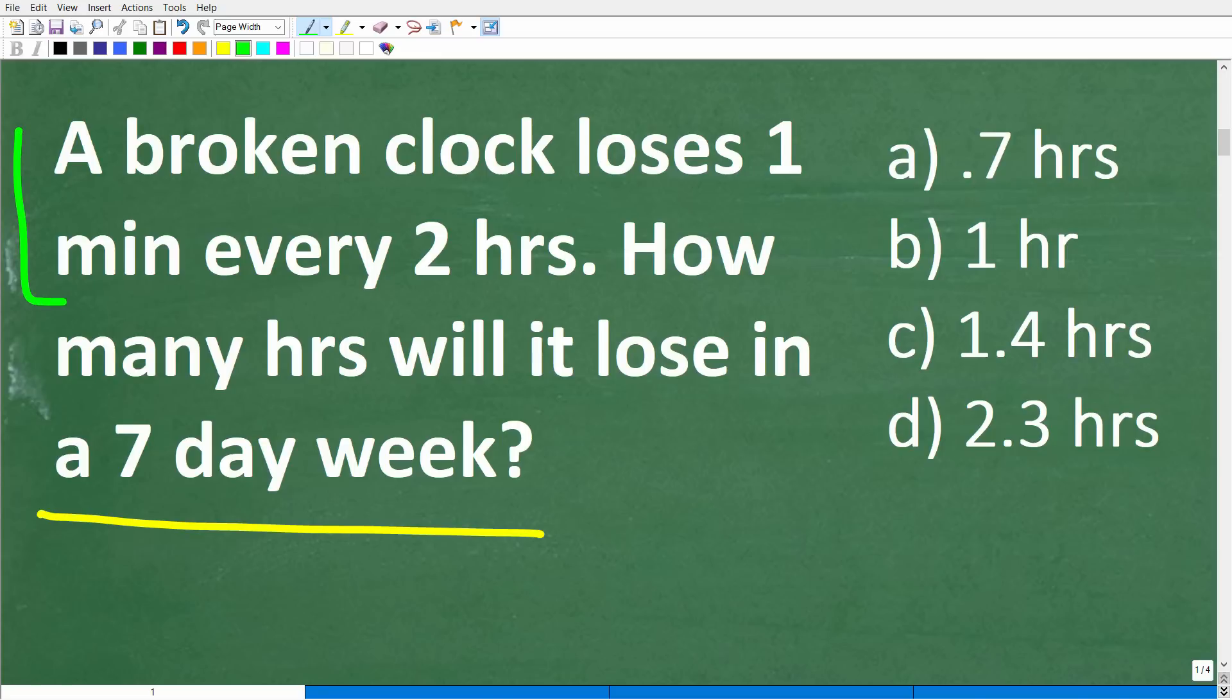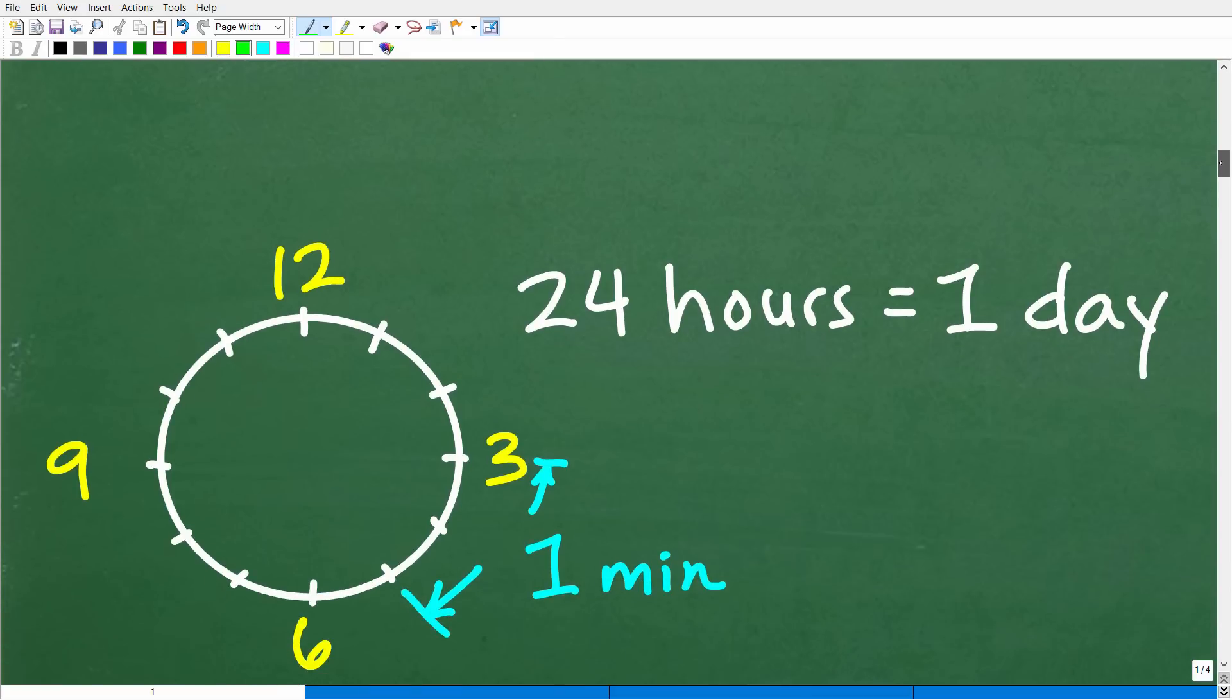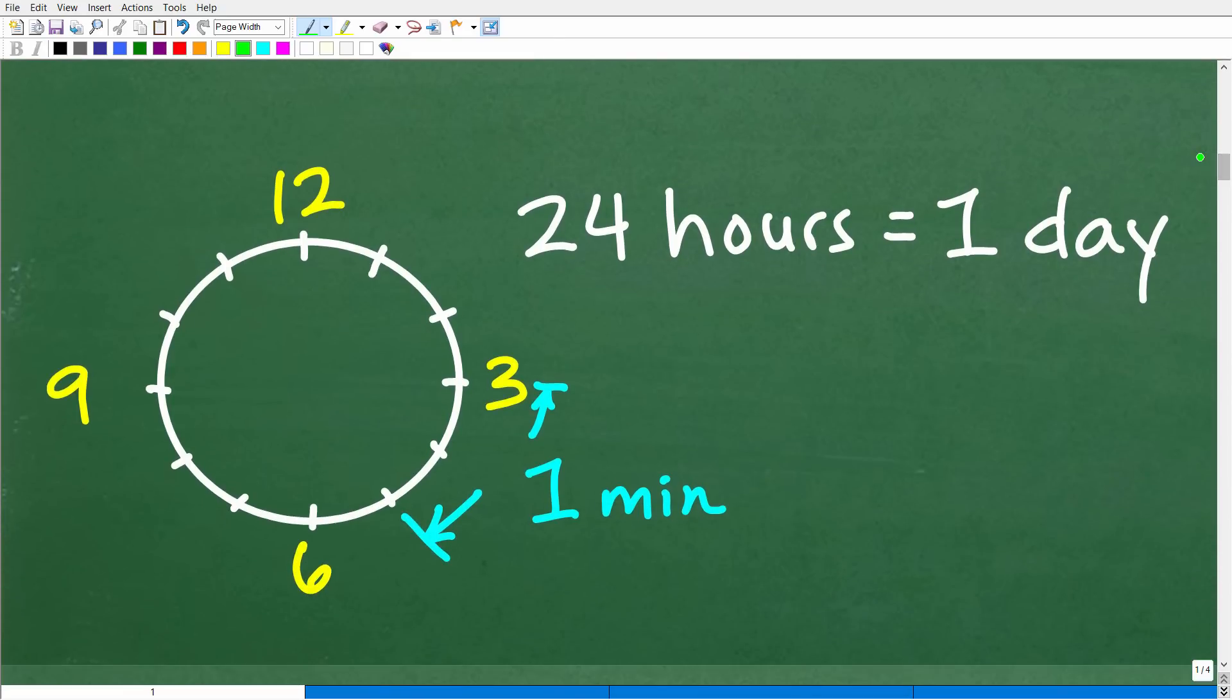I'm going to model this part of the problem right here, and that is a broken clock loses one minute every two hours. So I'm kind of thinking of a clock, an old-school clock. But here is my clock. And every two hours, I'm just going to pick two hours on this clock, like three to five. That's what came to mind. So from three to five, this clock will lose one minute.